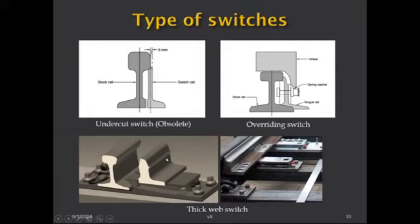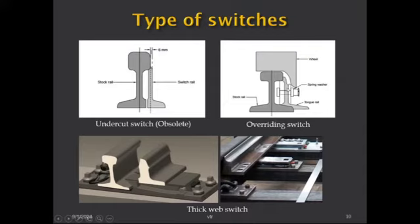Nowadays we also have the thick web switch, which has been introduced. Here the tongue rail is manufactured not from a normal rail section but from a special asymmetrical rail section. The tongue rail is much thicker and the height is reduced to about half, making it much stronger and more resistant to lateral deflection. This addresses the slenderness and flexibility issue of the overriding switch where, especially at high speeds, the tongue rail could deflect laterally.